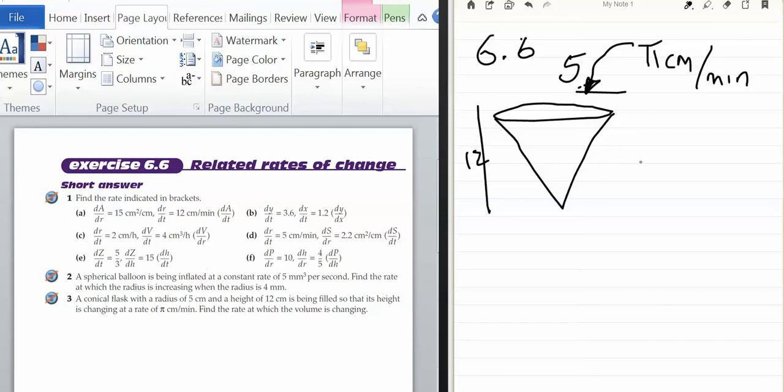So I know that dv dt is pi because it's being filled at pi centimeters per minute. So the volume is increasing by pi centimeters per minute. I misread that. It's the height that is increasing. So that's dh dt. So it's being filled at pi centimeters per minute. That's dh dt equals pi.